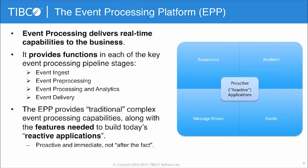When looking at an event processing platform, you're typically looking for four key capabilities: how it ingests data, how it pre-processes events, what type of processing and analytics it provides, and how it delivers events to different destinations. These systems were previously called complex event processing systems, but today's digital business has progressed these capabilities further. Now I'm looking for a platform that allows me to build systems that are responsive, resilient, message-driven, and elastic — often described as reactive applications in the marketplace, but really about providing proactive systems.